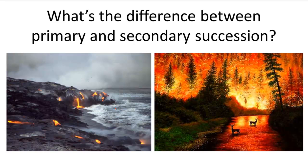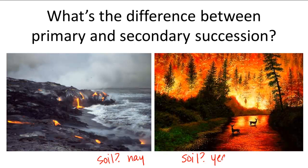Here's the difference between primary and secondary succession. In primary ecological succession, the ecosystem must rebuild after being completely destroyed to the point where even the soil is gone. Whereas in secondary ecological succession, the ecosystem rebuilds when the soil is still intact.